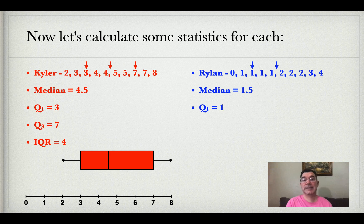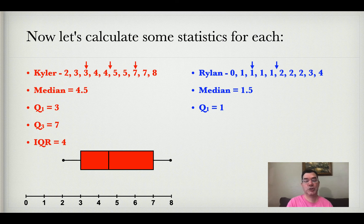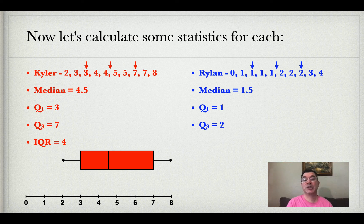That splits the list into two sets of five numbers. The lower quartile is the median of the lower half, which is 1. The upper quartile is the median of the upper half, which is 2.